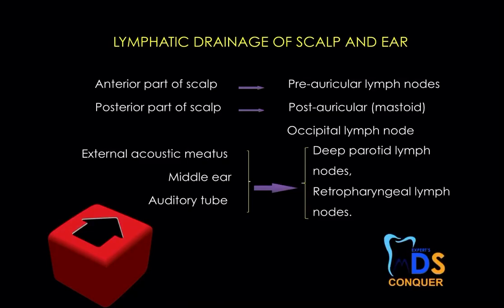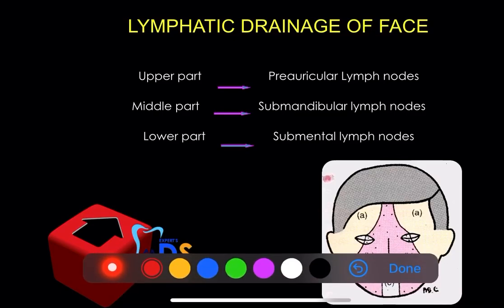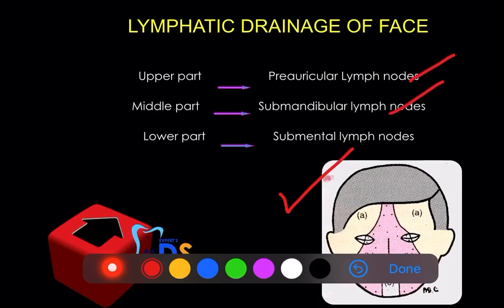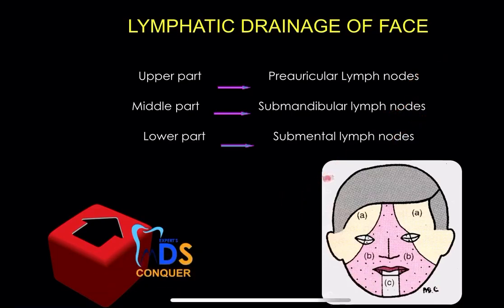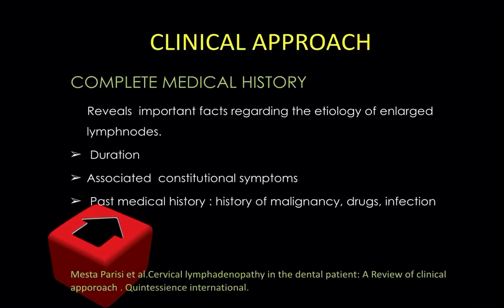Coming to the drainage of the scalp and the ear — it's additional points, not required but useful to include. For the face, this diagram is important: the upper part drains to the preauricular lymph nodes, the middle part drains to the submandibular nodes, and the lower part drains to the submental nodes. Draw this diagram, label it clearly, and mention the lymphatic drainage of the face.